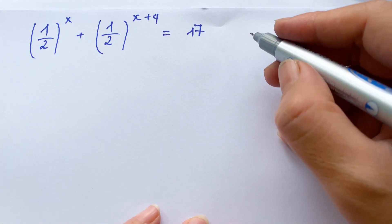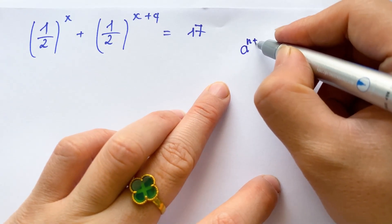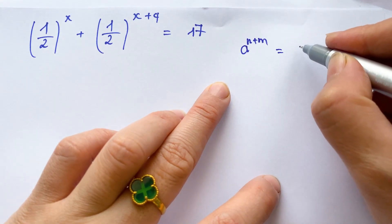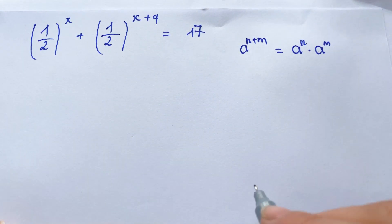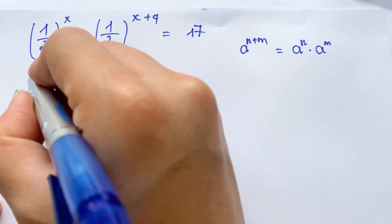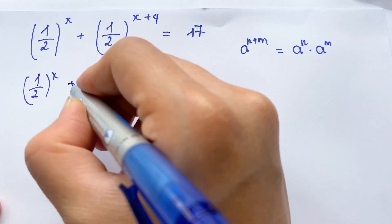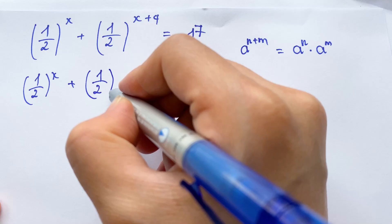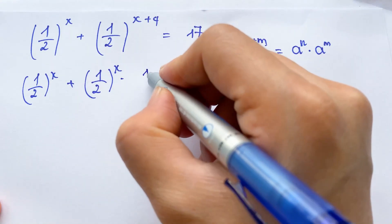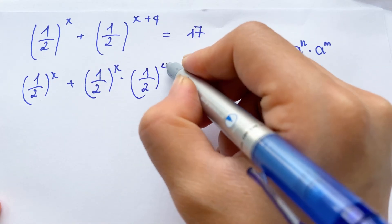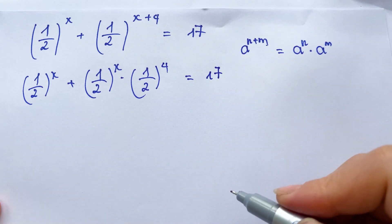In this case, we need to apply the exponential rule: a^(n+m) equals a^n times a^m. Therefore, you can look at a^(1/2)^x plus a^(1/2)^x times a^(1/2)^4 equals 17.